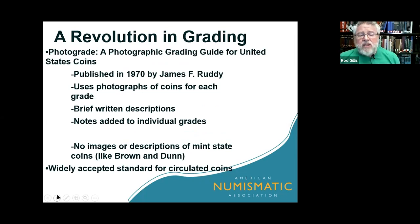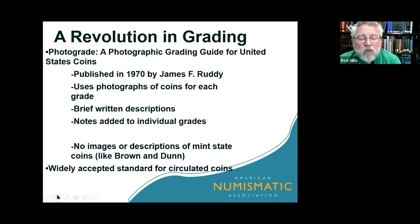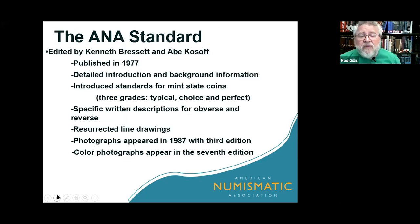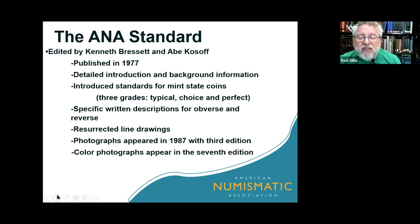Photo grade, published in 1970 by James Ruddy, really changed the way people were able to study grading. It used photographs of coins for each grade with brief written descriptions and notes added to individual grades. There were no images or descriptions of mint state coins — unlike Brown and Dunn — and it was widely accepted as the standard for circulated coins. Then we have the ANA standard, edited by Bressett and Abe Kossoff, published in 1977, which provided detailed introduction and background information, introduced standards for mint state coins, specific written descriptions for obverse and reverse, and resurrected line drawings. Photographs appeared in the third edition in 1987, and color photographs appear in the seventh edition.